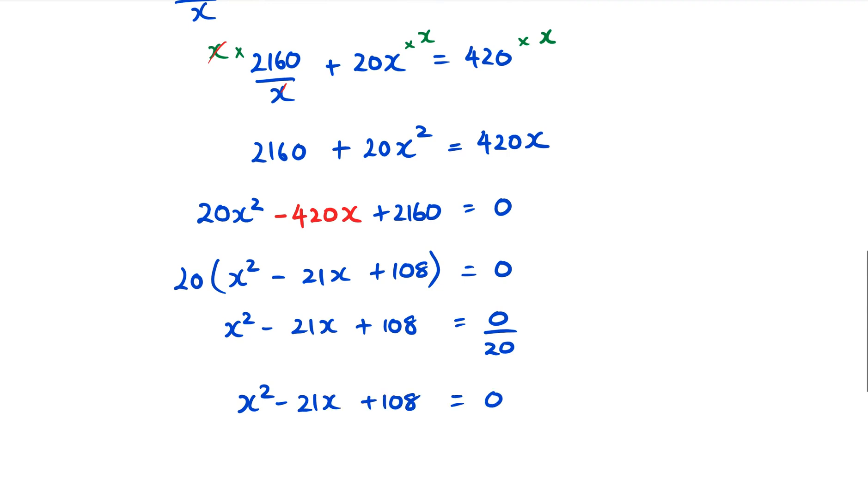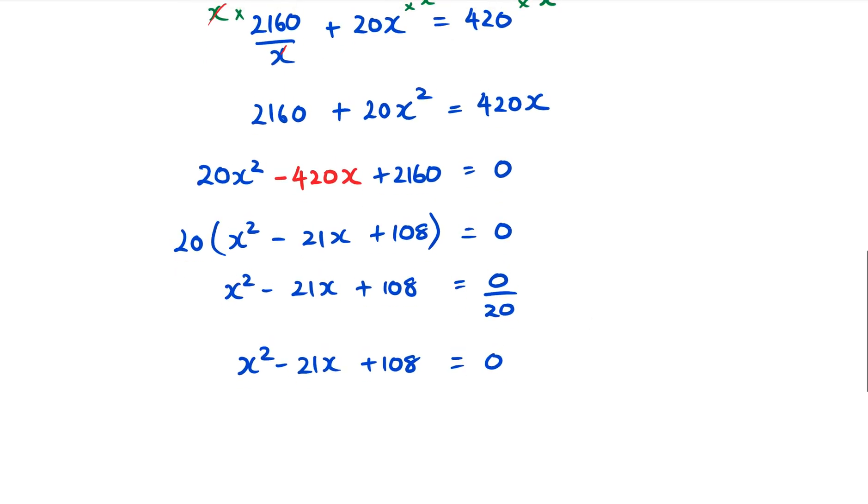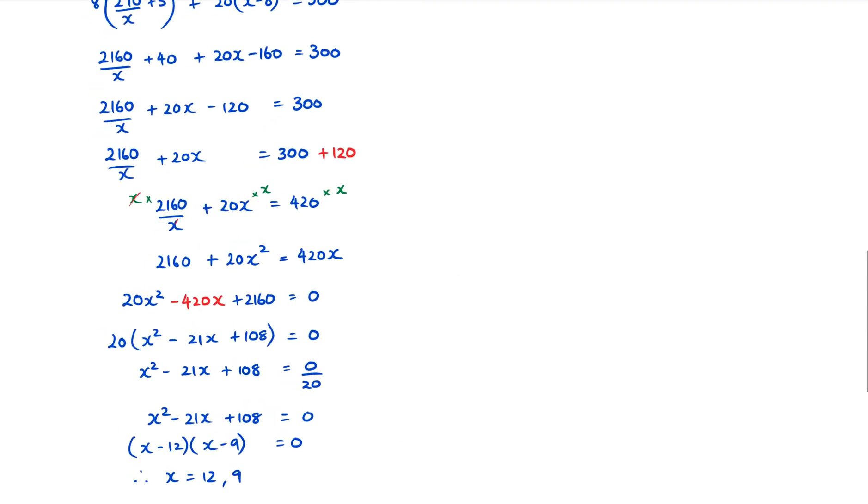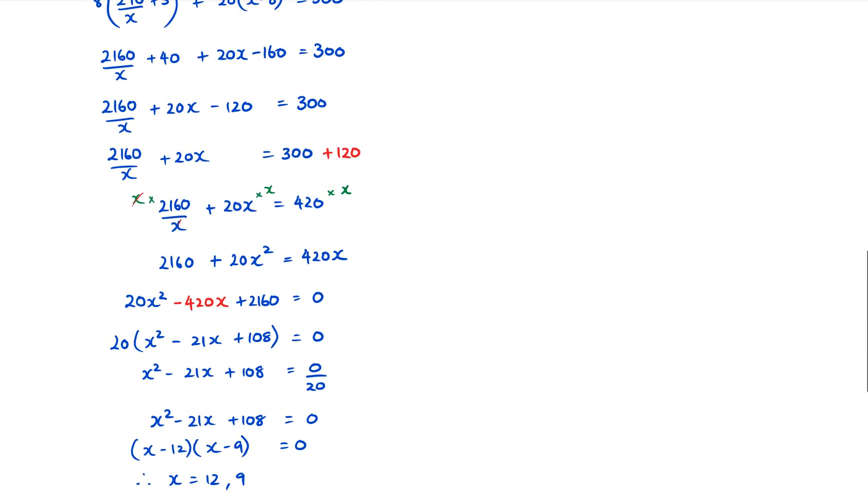You can put this in the quadratic formula if you're not comfortable, but I know the times tables, so I see the pattern: (X - 12)(X - 9) = 0. Therefore X equals 12 or X equals 9. Those are my two answers.